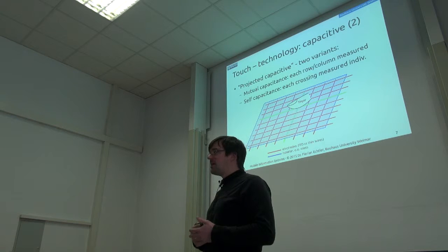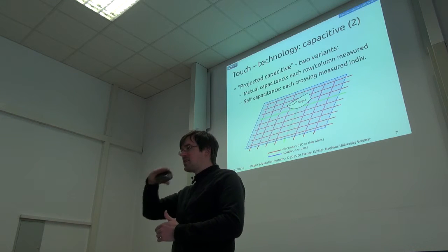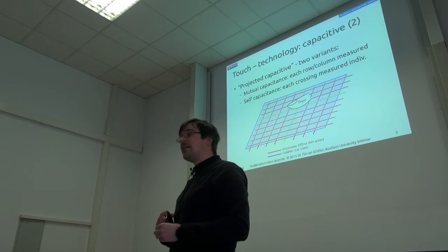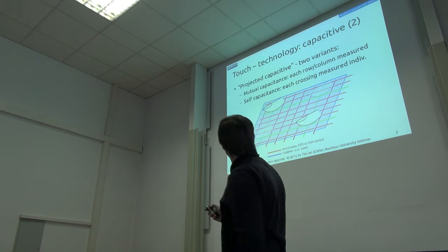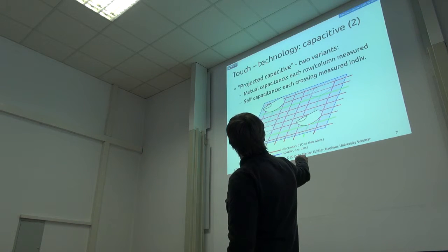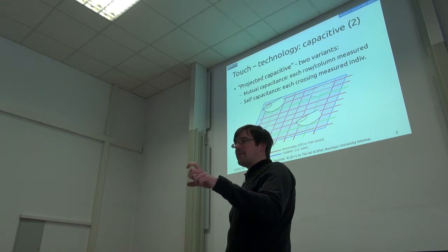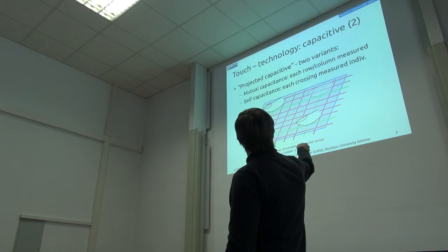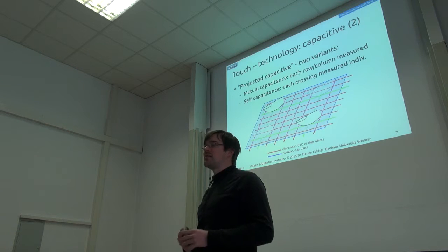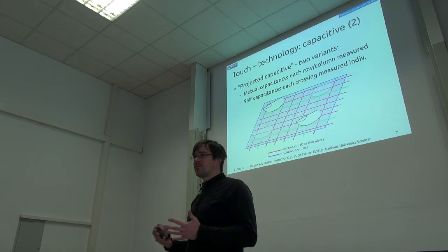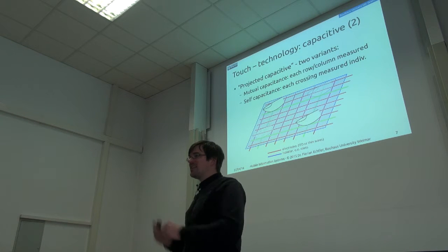And the more complex variant is called self-capacitance, where I measure each crossing point individually. Of course, this needs to happen a lot faster because you have a much higher number of crossing points. So, you need more complex circuits. Can anyone think of an idea why you would actually have to use the more complex variant? So, what's the drawback if you measure just each row and each column? Multi-touch? Then you get a signal on this and this row and on this and this column. And then you still know there are two contacts, but you can't really tell anymore if it is this combination or is it, for example, this combination.